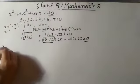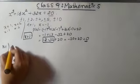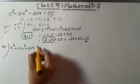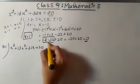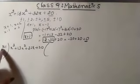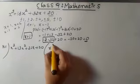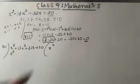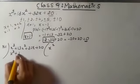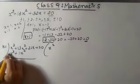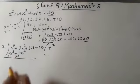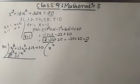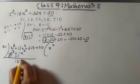Now I will use the long division method: x plus 1 divides into x cubed plus 13x squared plus 32x plus 20. The first term of the quotient is x squared, since x cubed divided by x is x squared. Multiplying x plus 1 by x squared gives x cubed plus x squared. Subtracting, x cubed cancels and 13 minus 1 gives 12x squared.